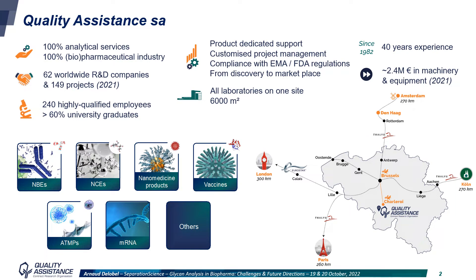Very quick words about Co-ET Assistance. We are a CRO, a contract research organization that provides analytical services to pharma and biopharma companies. We were founded in 1982, 40 years ago, and we are today 240 employees, located in a single site in the south of Belgium. We work in compliance with FDA and EMA regulations on all types of products, from small molecules to biologics, but also on cell and gene therapies and mRNA.